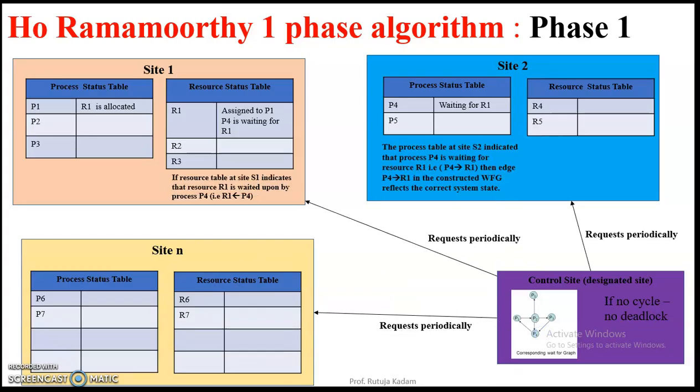Now here it is not able to identify the false deadlocks, and it eliminates the inconsistency. How does it eliminate the inconsistency? Let us consider that resource R1 is there and it has been allocated to process P1.